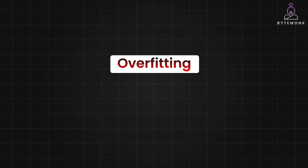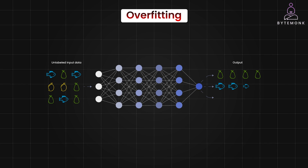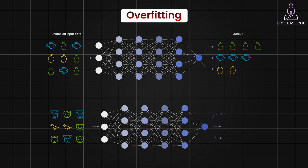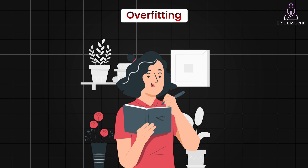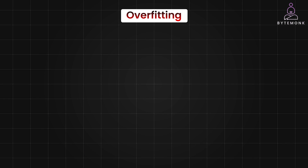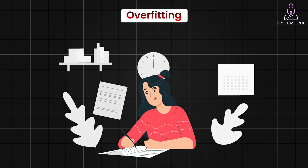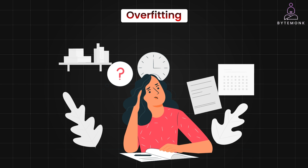Overfitting happens when a machine learning model learns the training data too well, to the point where it starts to memorize the specific nuances and noise present in that data. Instead of learning the underlying patterns and relationships that generalize to new data, the model becomes overly specialized for those training examples. Think of it like this: imagine you are studying for a test by memorizing the answers to practice questions. If the test only includes those exact questions, you will do great. But if the test presents new questions that test your understanding of the concepts, you will struggle because you haven't truly learned the material. In machine learning, overfitting leads to a model that performs very well on the training data but poorly on new, unseen data — it's like the model has memorized the answers but doesn't understand the broader concepts.